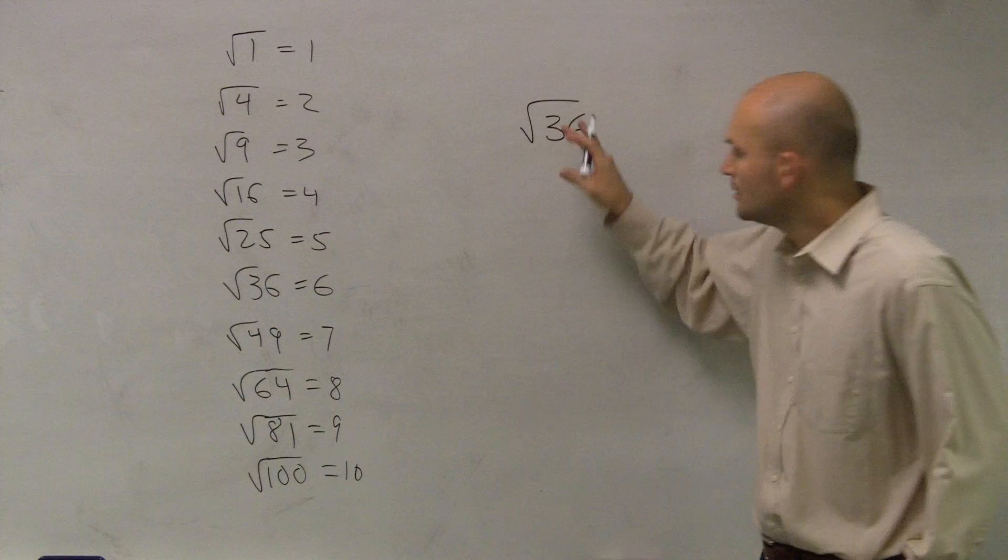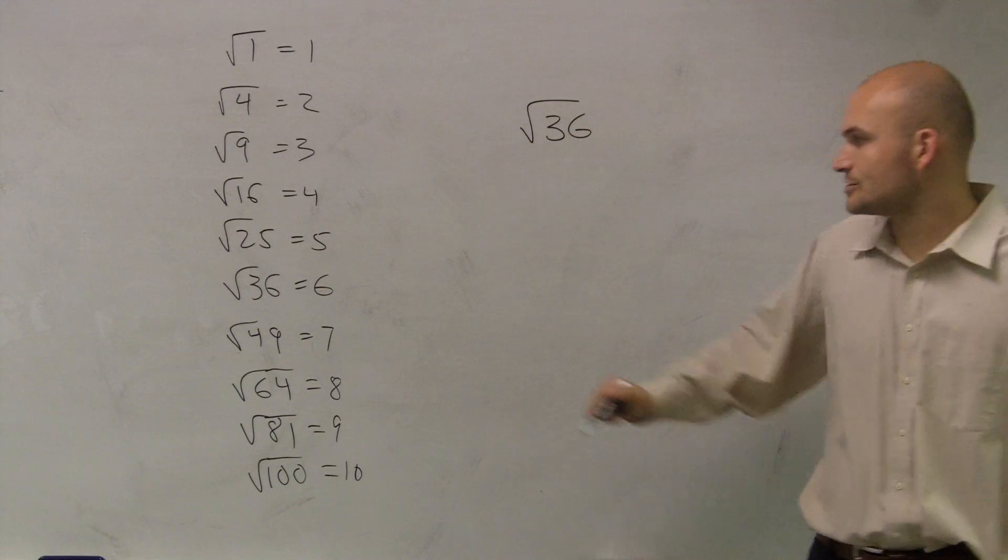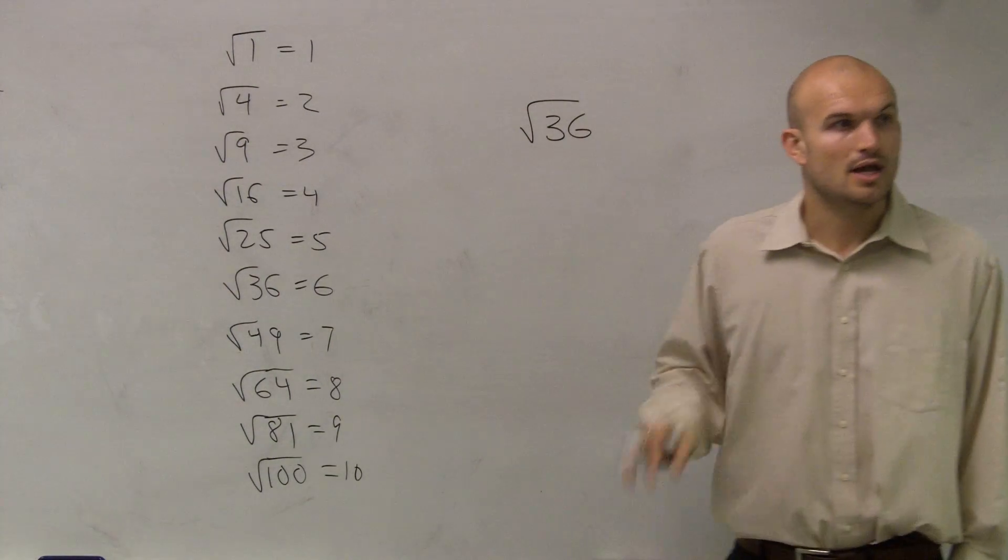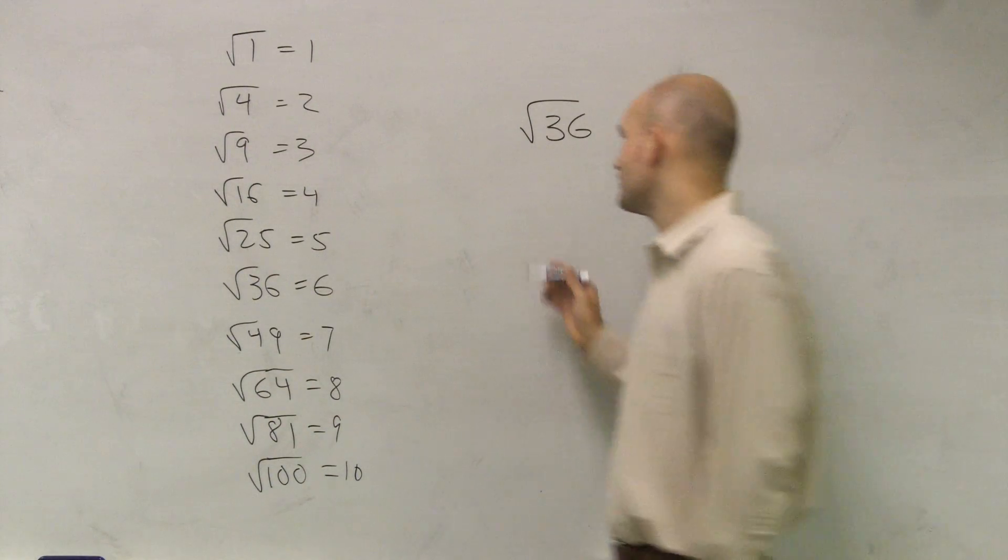We know that the square root of 36, what two numbers multiply to give me 36? She could say that answer's 6, because I even have the answer right here. But let's use our rules. If I was going to show you guys what to do with this,